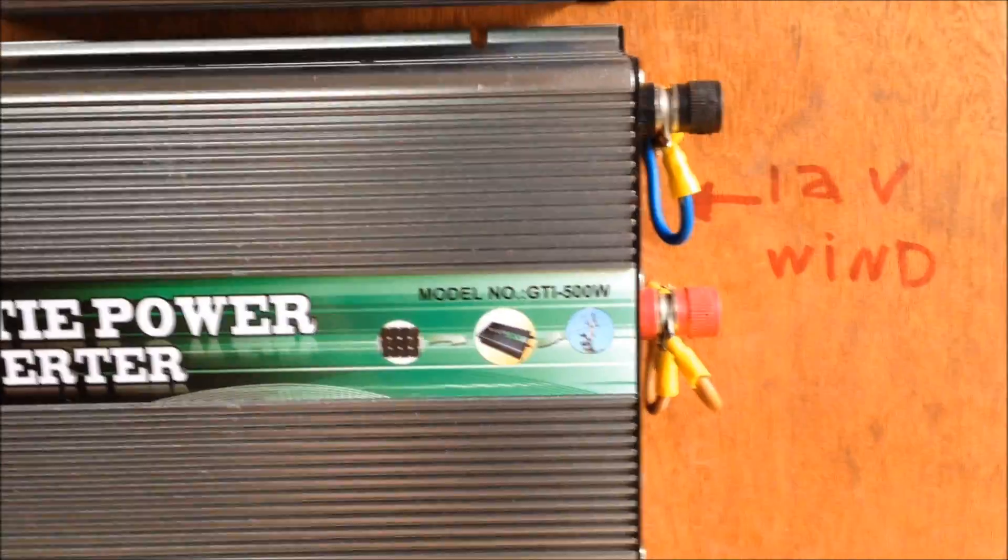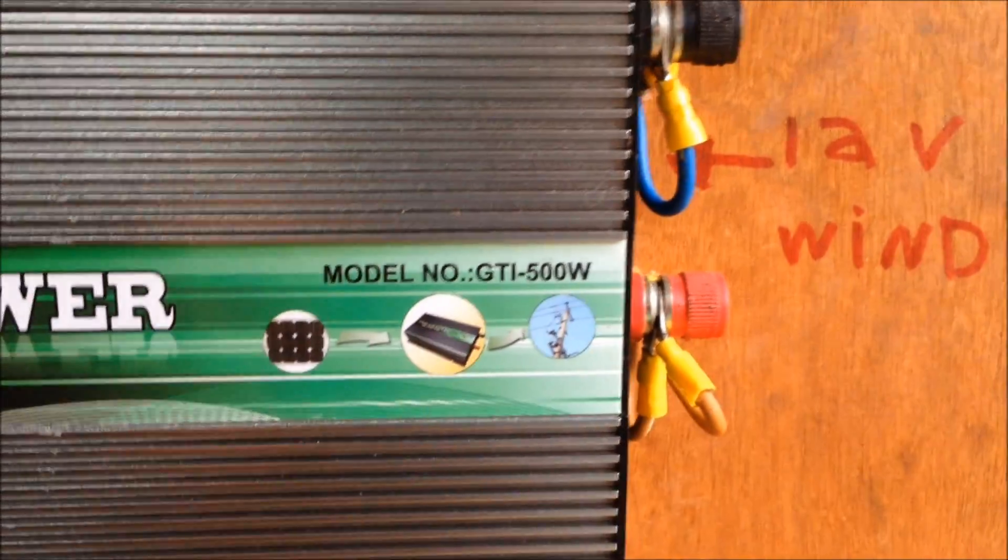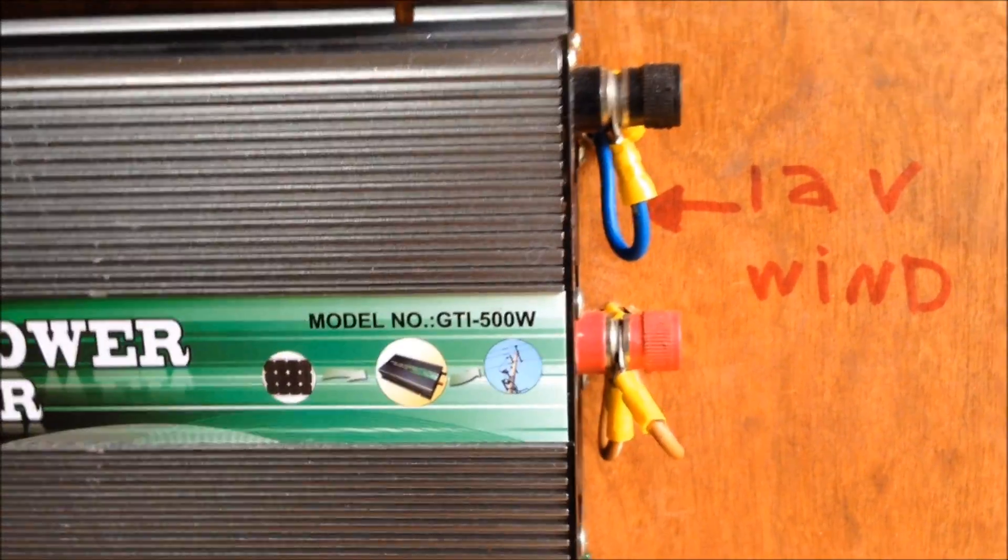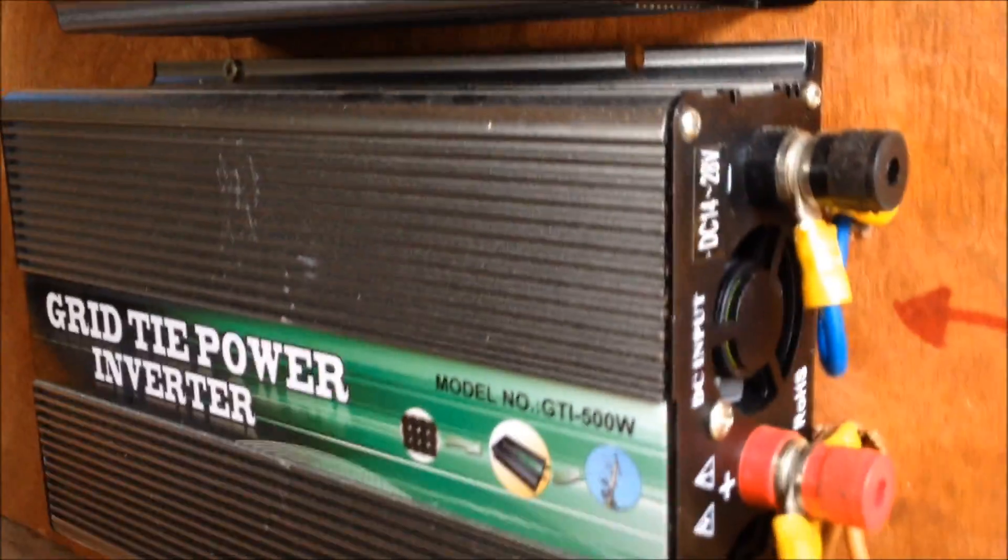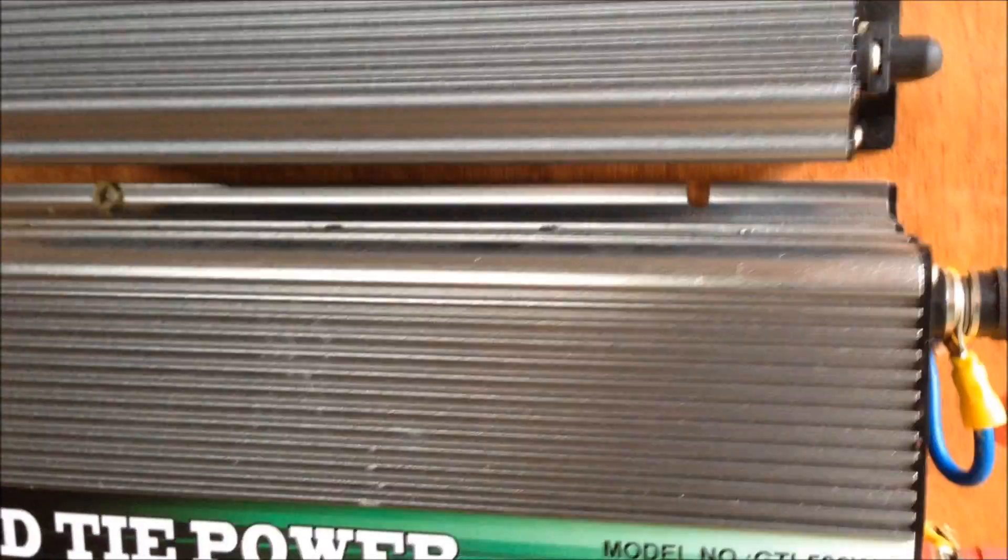If you have a grid tie inverter on and it's pumping in 500 watts, you have to be using 500 watts or it's just being wasted into the grid. So this grid tie inverter is 14 to 28 volt and I'm running on a 24 volt system.